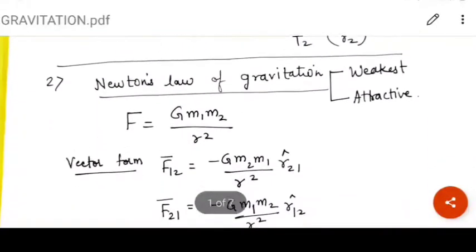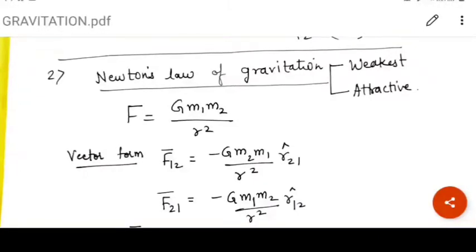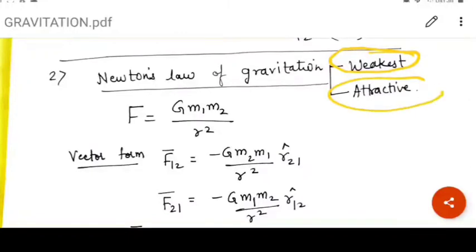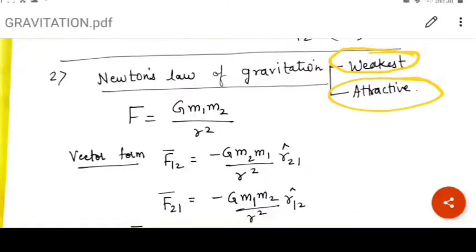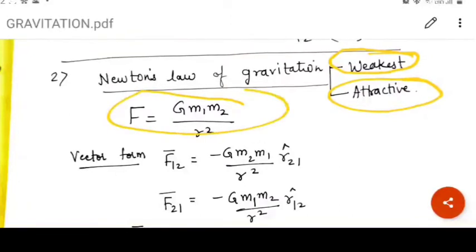Next topic comes as very important topic by which physics is made, Newton's law of gravitation. Law of gravitation says that gravitational force is the weakest force in universe as well as it is always attractive in nature. It is equal to capital G M1 M2 upon R square as the gravitational force.